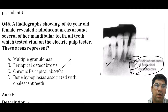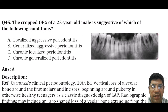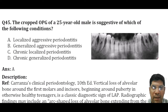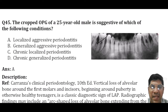A cropped OPG image of a 25-year-old male is suggestive of localized aggressive periodontitis. Vertical loss of the alveolar bone around the first molar and incisors beginning around puberty in an otherwise healthy teenager is a characteristic diagnostic feature of localized aggressive periodontitis.